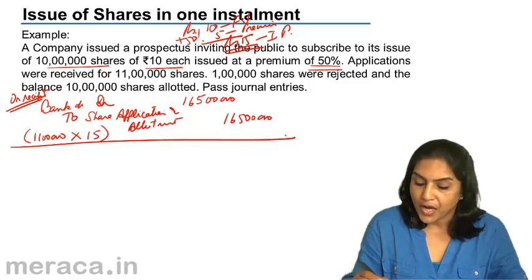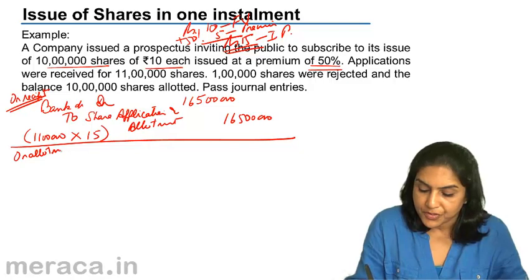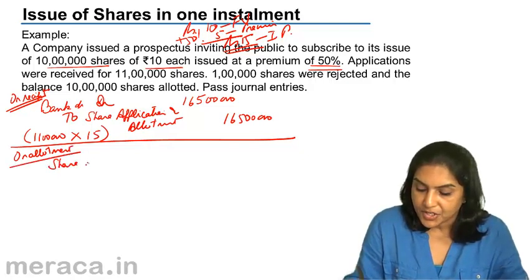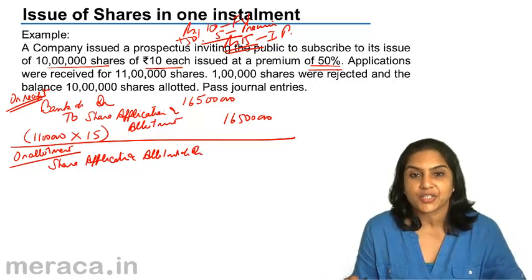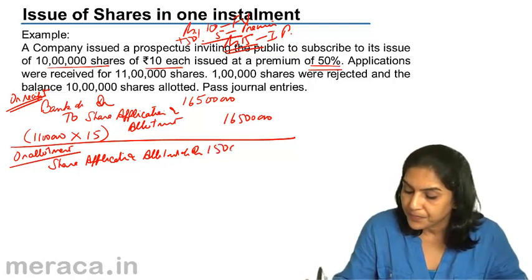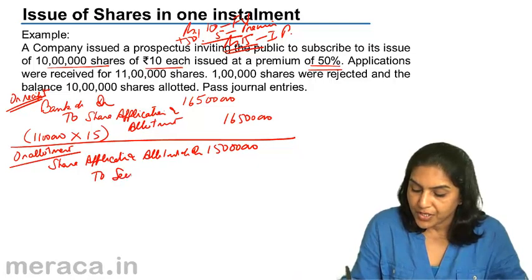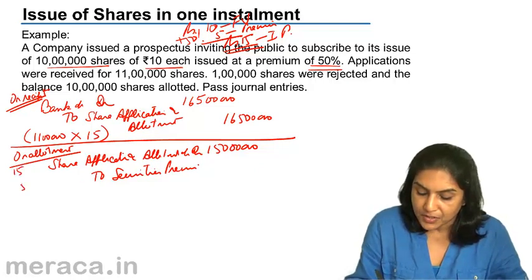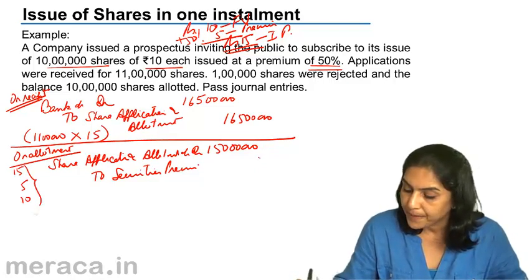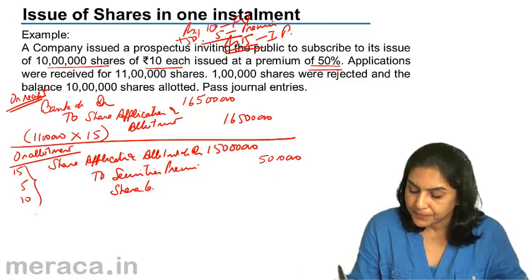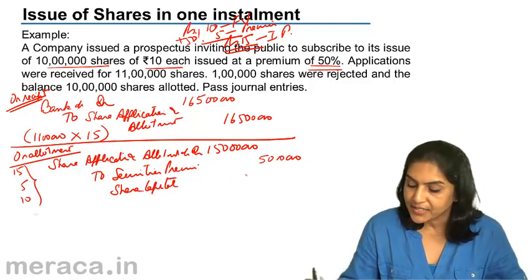Next, on allotment of shares, the entry is: Share Application and Allotment Account debit with 10 lakh shares allotted × ₹15 = ₹1 crore 50 lakhs. This is credited to Securities Premium at ₹5 per share — that is ₹50 lakhs — and to Share Capital at the face value of ₹10 per share — that is ₹1 crore.